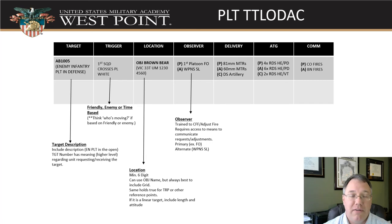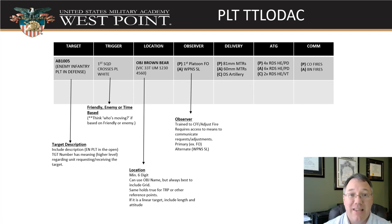Make sure you have an observer — it doesn't always have to be the FO. Any of your squad leaders, yourself, or the platoon sergeant can serve, but someone has to be able to observe the rounds' impact and confirm that the target is destroyed, that more rounds are needed, or to adjust fire. Make sure that observer can actually see the target. A lot of cadets have trouble with this — they want to just make it the FO, but the FO might be with another squad and not able to see a fire mission supporting a different squad.